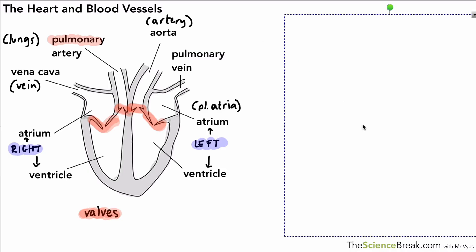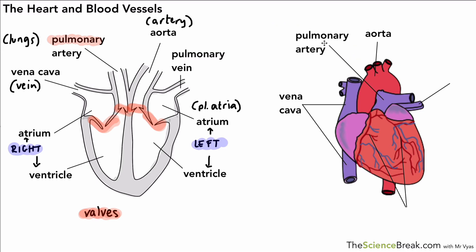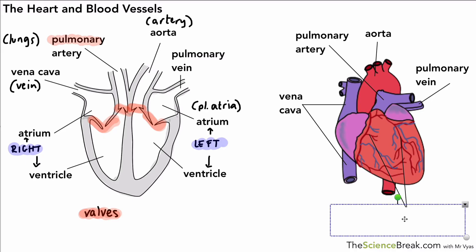You might see the heart drawn more like a picture than a diagram, and you should be able to label the main blood vessels there as well. The one at the top is the aorta, which goes around the body and comes back as the vena cava — there are actually two branches of the vena cava going back into the heart. We've also got the pulmonary artery going to the lungs and the pulmonary vein coming back from the lungs to the heart.